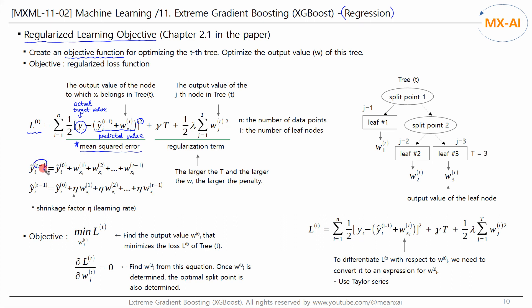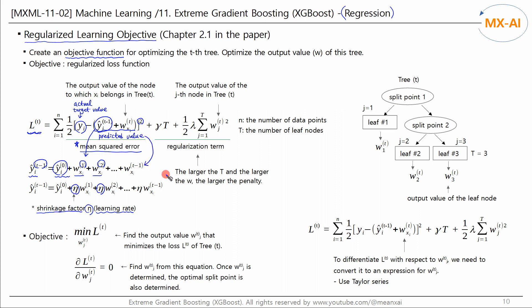The predicted Y value in iteration round T-1 is obtained by adding the output values W of each iteration round to the initial prediction Y-zero. This is the predicted Y value obtained through T-1 iterations. In the previous video, each output value was multiplied by the learning rate Eta, which is the shrinkage factor. The shrinkage factor stabilizes learning by reducing the size of the output values. The above objective function is an expression that does not apply the shrinkage factor Eta.